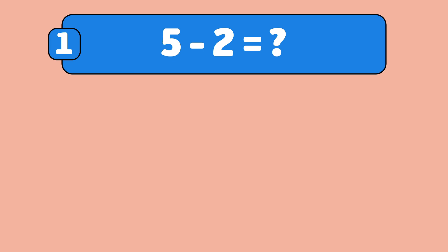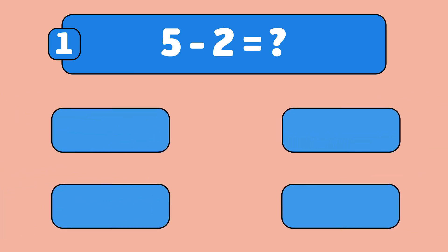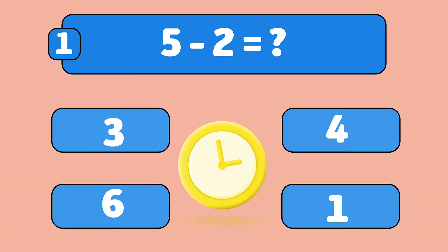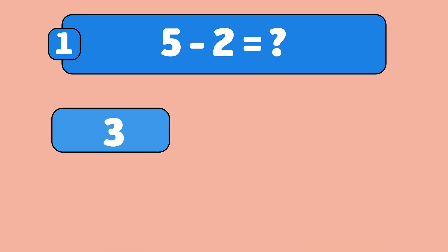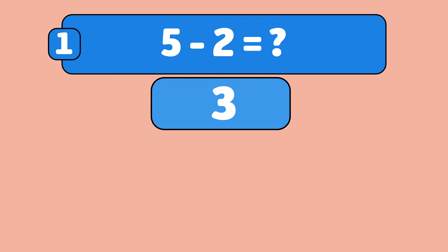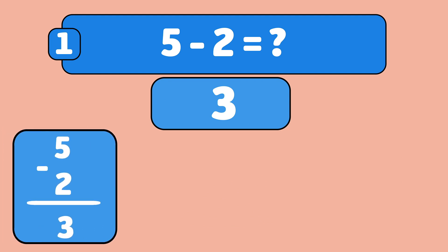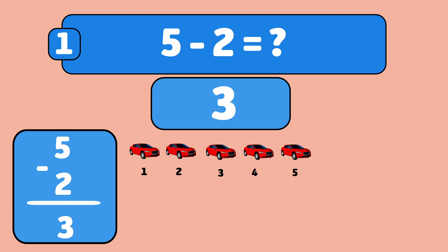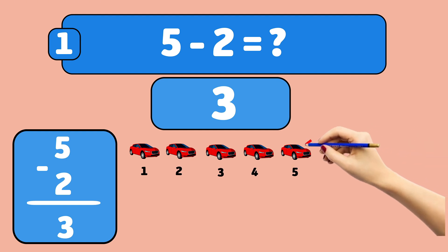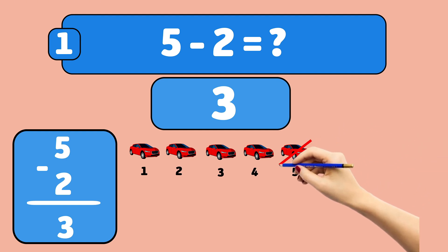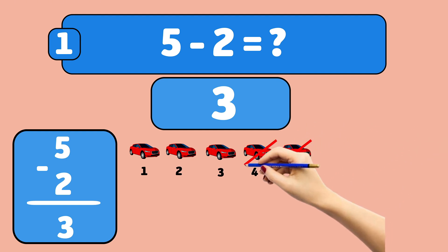What is 5 minus 2? The answer is 3! Let's see how we got that. Imagine you have 5 cars and we take away 2. That leaves us with 3 cars.